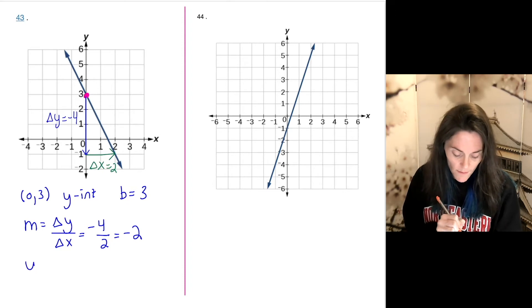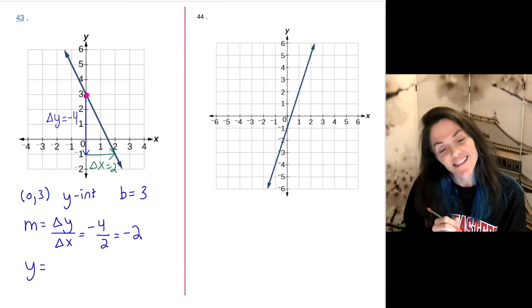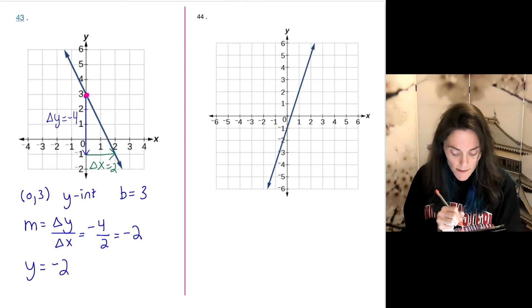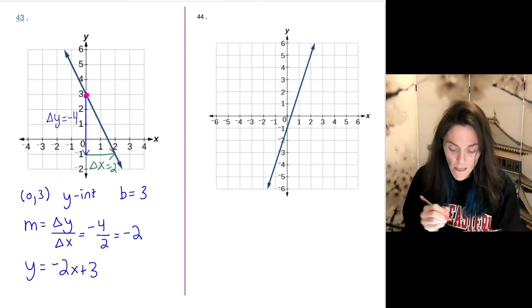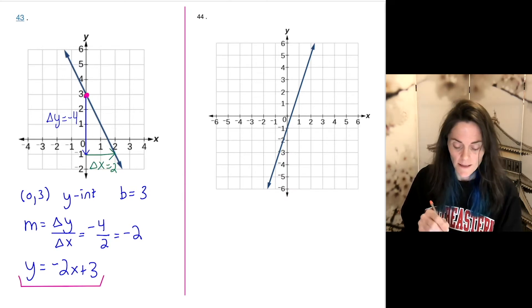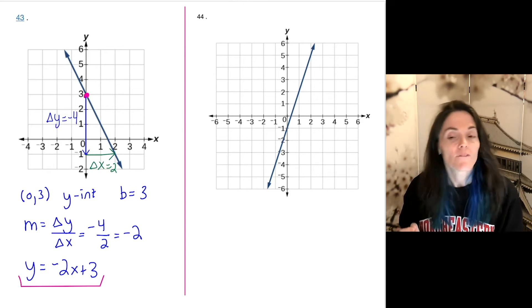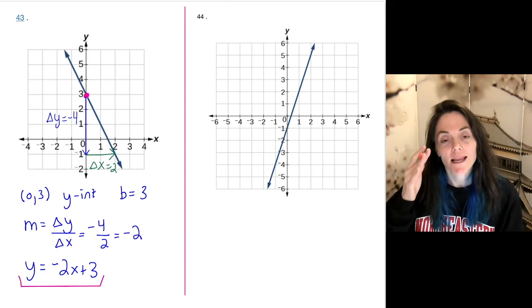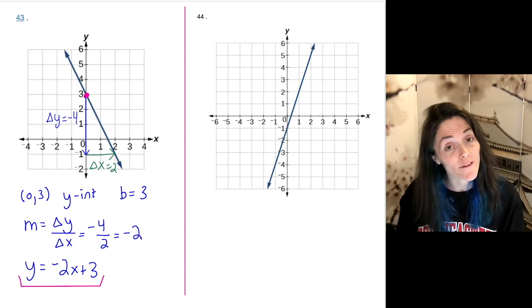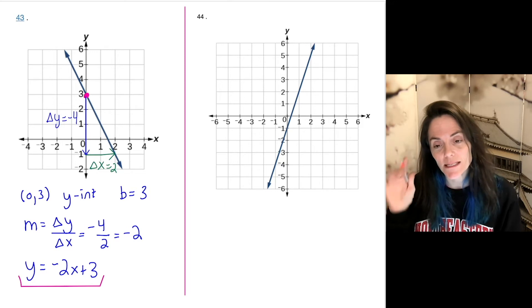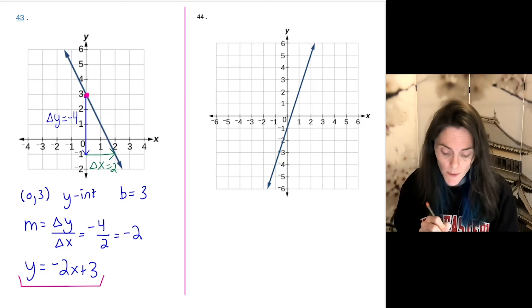And so my slope, which is change in y over change in x, well, this is minus 4 over 2. My slope is negative 2. So because I have the intercept and I have a slope, I will use slope-intercept form. This is minus 2x plus 3. This will be the answer I report back.